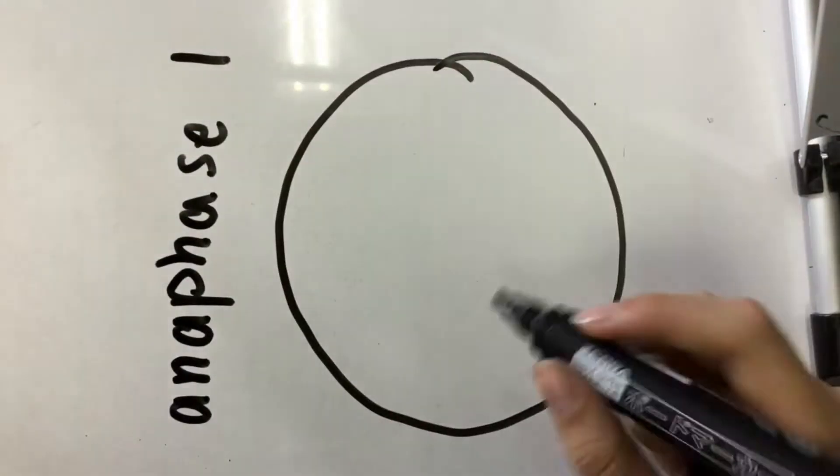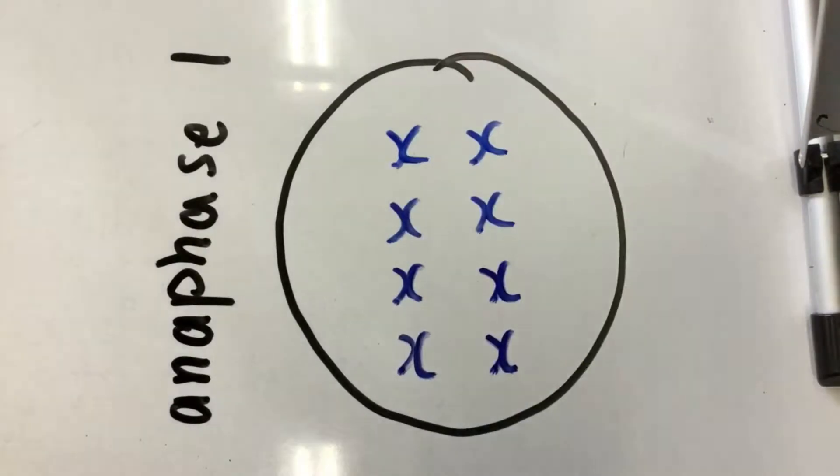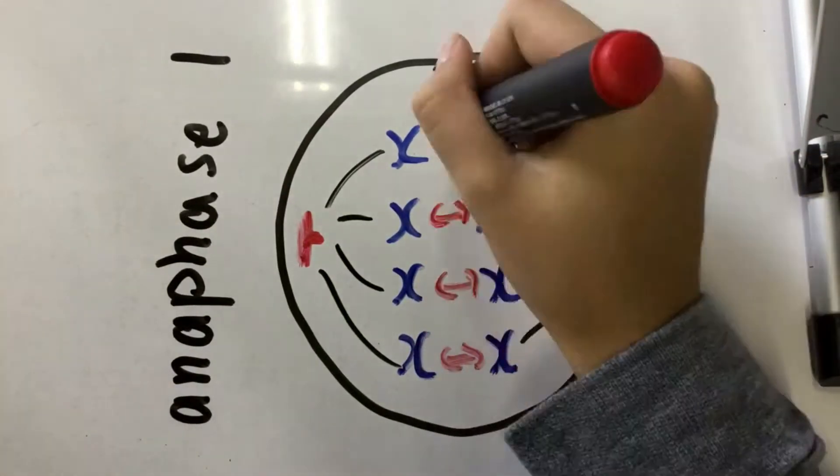Then comes anaphase 1. Motor proteins pull on ropes and the chromosomes from mom and dad split.